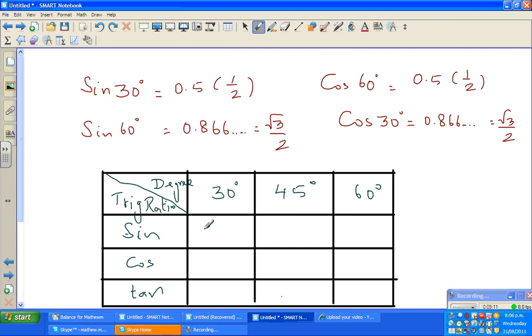Now sine 30° is 1/2, or you can say this is √1/2. I'll explain why. Sine 45° is √2/2. And sine 60° is √3/2. Just like that. It's very easy. Sine 30° is nothing but 1/2.